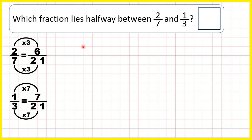So we need to find what's halfway between 6/21 and 7/21. Now this is tricky. You know that halfway between 6 and 7 you have 6 and a half, but we can't write 6 and a half over 21.